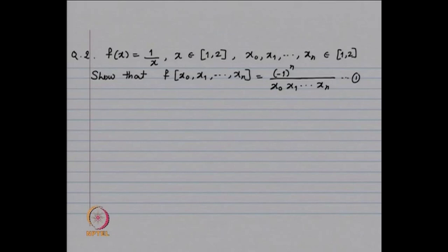Now look at the second problem. We are looking at f(x) = 1/x for x in [1, 2], and we want to prove that the divided difference f[x_0, x_1, ..., x_n] is given by (-1)^n divided by (x_0 · x_1 · ... · x_n). In this problem, induction is going to work. We will use the recurrence formula for divided differences.